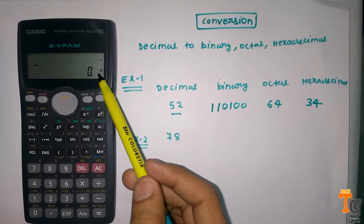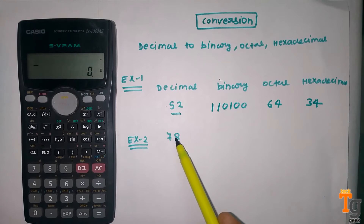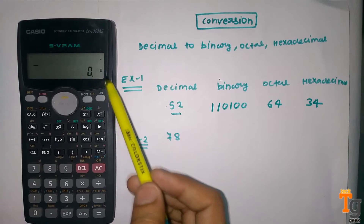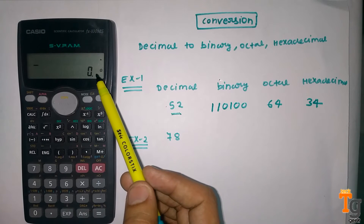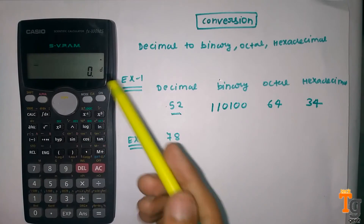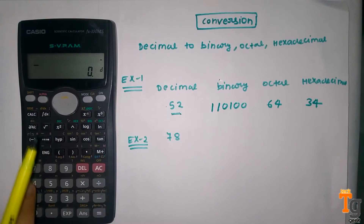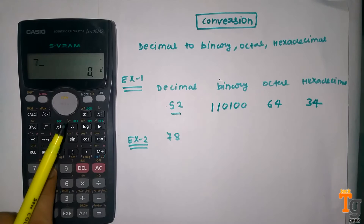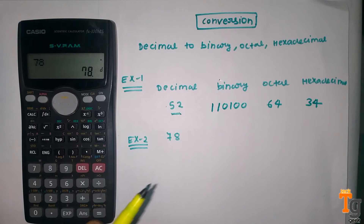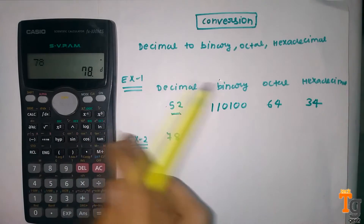Make sure that it should be decimal when you are entering the value. Here you can see it is showing a sign of octal, so first you have to convert to decimal form. Here you can see decimal, and now you can enter the value 78.